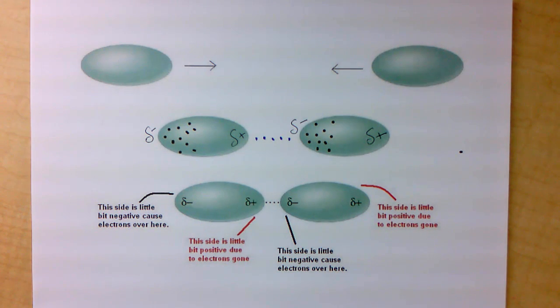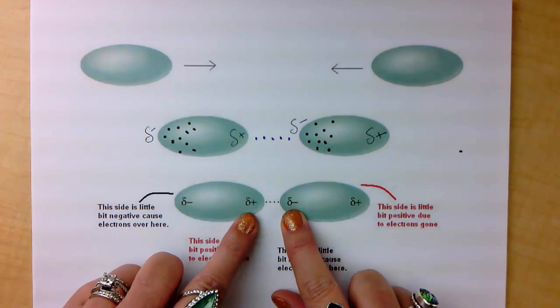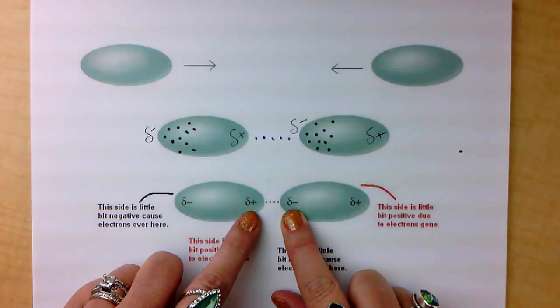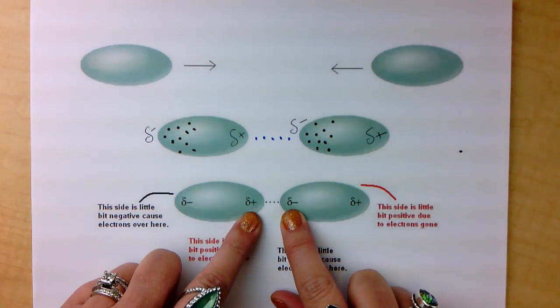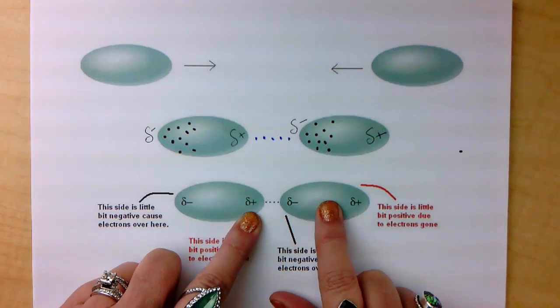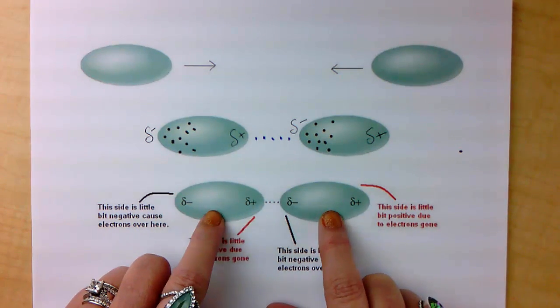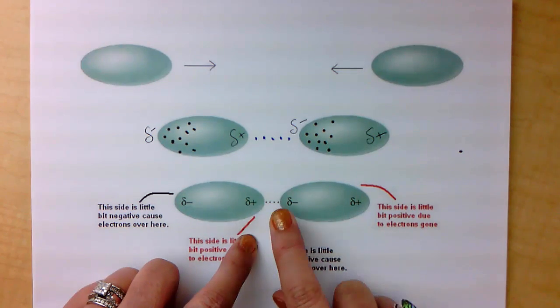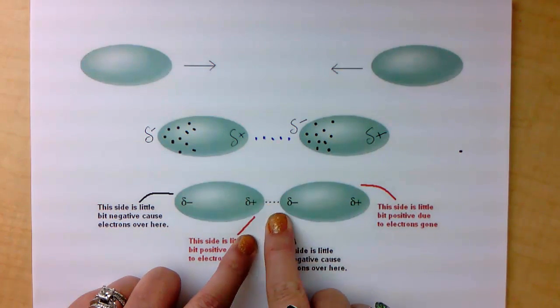All intermolecular forces are attractions between a little bit positive sides of a molecule and a little bit minus sides of a different molecule. You have to have at least two molecules to have a force, because the force is between the molecules.